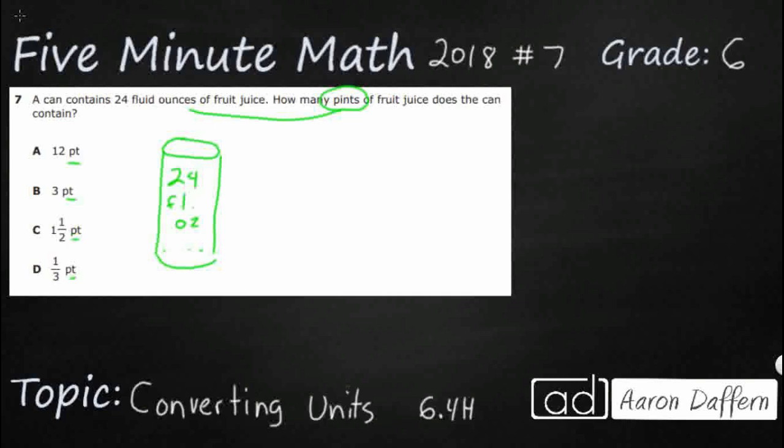So how do we change fluid ounces into pints? We actually have to change it twice. First, we need to know that we're starting with our fluid ounces. So 8 fluid ounces equals 1 cup or 1C.